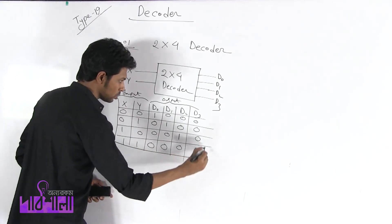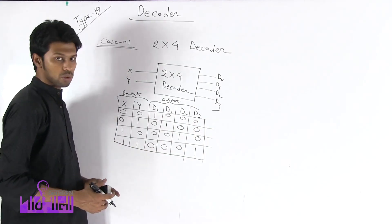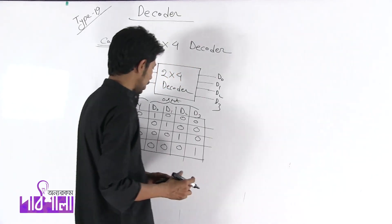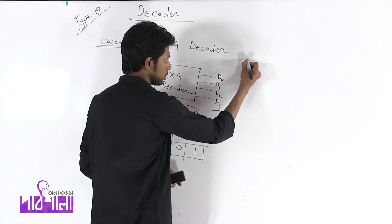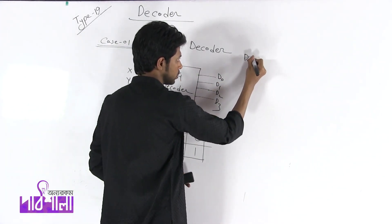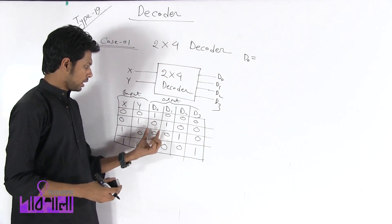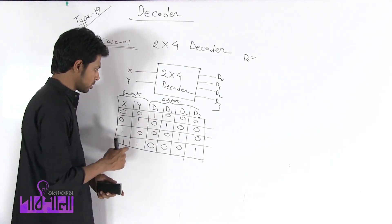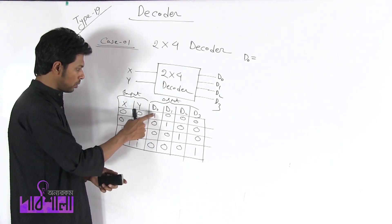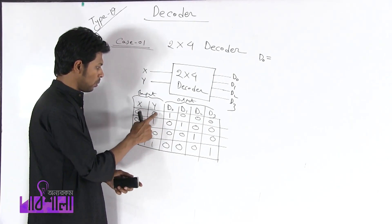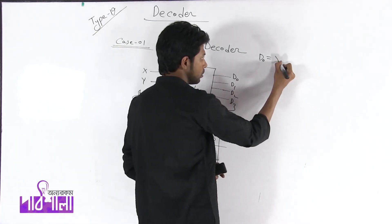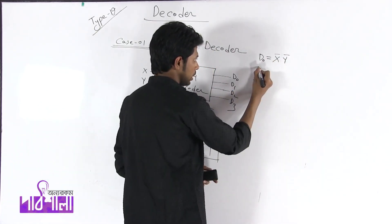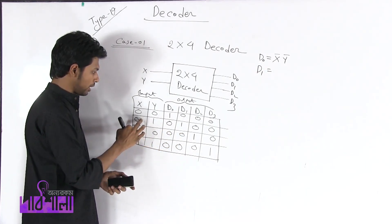So this is the truth table. This is the output of the input function. The outputs of the chapter are D0, D1, D2, D3. First we have D0. Now the output of the input function is 1, so the output function is X'Y', meaning x-complement and y-complement.